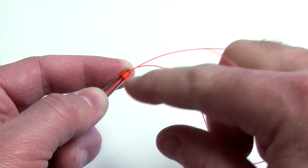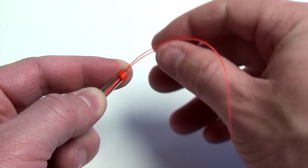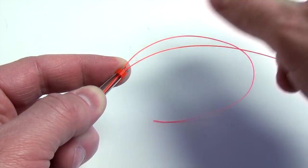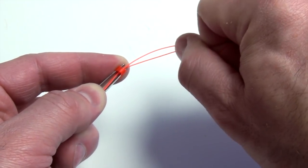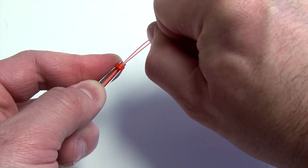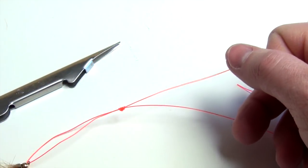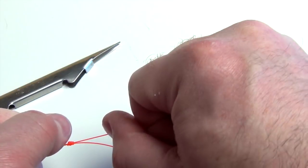Now all we need to do is pull the barrel knot onto the level line of the leader. You're going to do this with just one smooth stroke while pulling on that tag end. So you just pull it off the nose of the tool, and you can tighten it really quick.